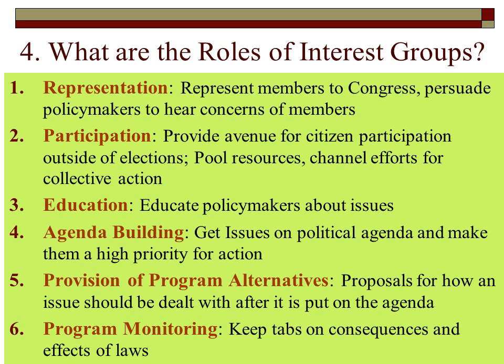Number six is program monitoring — keeping tabs on the consequences and effects of the law. After a law is put into place, is anybody checking if it actually did anything good, or if it's failing, or if it didn't address the original problem? Interest groups pay attention to such things. They have research and analysis, and can bring that back to provide program alternatives, amendments to different laws, or use their influence to help members adapt something that didn't go well.